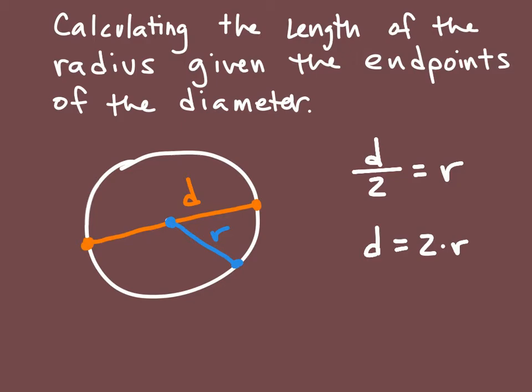And so what we want to do is use the endpoints of (-3, -1) and (9, 4) to figure out this information. We want to calculate the length of the radius given these two endpoints.